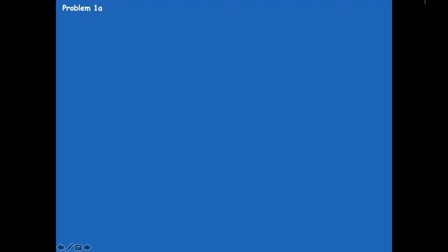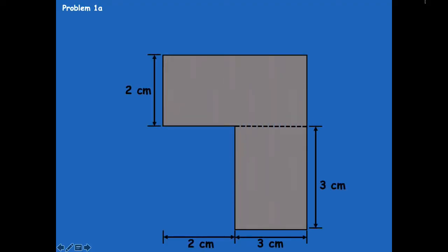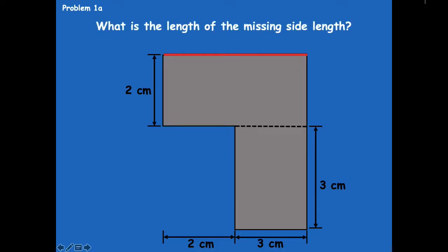So problem 1a in your problem set. Here is your shape. We have lots of information here. It says: what is the length of the missing side? So how would we figure out the length of that missing side — that red side right there? Well, if we know that the opposite sides are the same — remember, always the opposite sides are the same — we already know the measurements for this side because they told us they're two and three. So we would do two centimeters plus three centimeters equals five centimeters. So that means that side length is five centimeters.